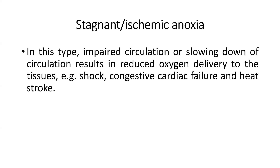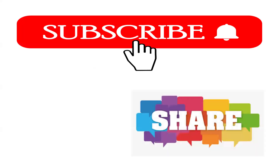The fourth type is stagnant or ischemic anoxia. Here, impaired or slowed circulation results in reduced oxygen delivery to the tissues. Examples include shock, congestive cardiac failure, heat stroke, and even acute corrosive or irritant poisoning. Thank you for watching this video — please subscribe, click the bell icon, and share this video with your friends.